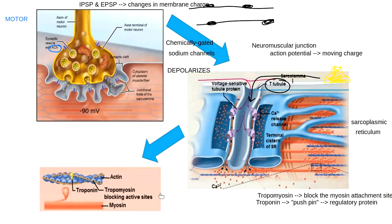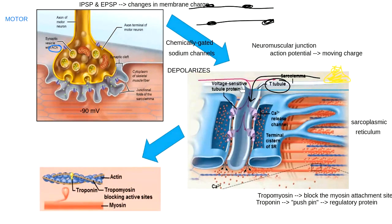The calcium release channels are mechanically gated, meaning they have to be physically pushed open. They are attached to voltage-gated sodium channels in the T-tubule. The voltage-gated channels open up because of the change in charge from the action potential. When those voltage-sensitive proteins open, they push open the neighboring mechanically gated calcium channels, releasing calcium from the sarcoplasmic reticulum.